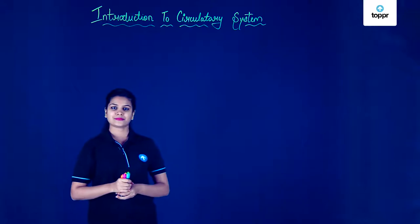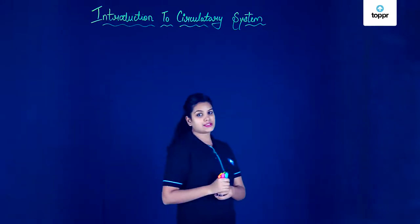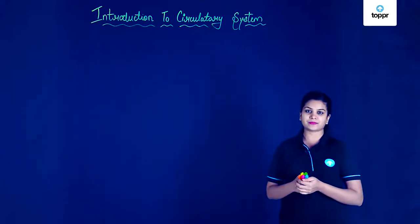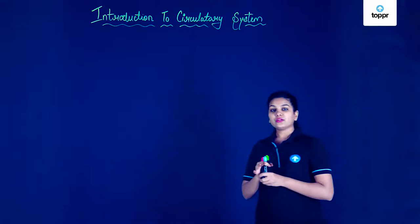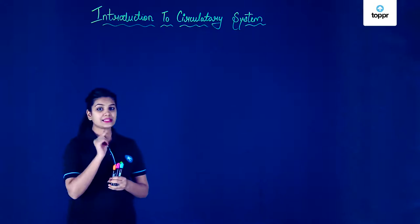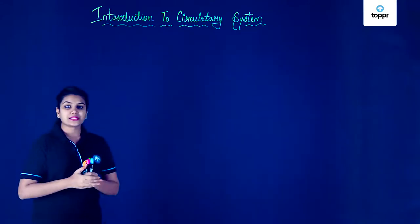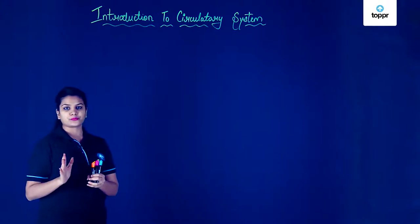Hey guys! In this lesson, let's focus upon the circulatory system, or the transportation in animals. To start with, we know that in unicellular organisms — meaning the animals which are made up of a single cell — the transportation of substances occurs with the help of simple diffusion.